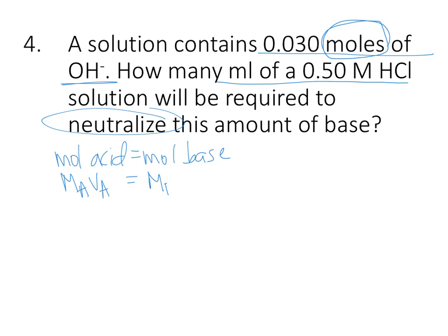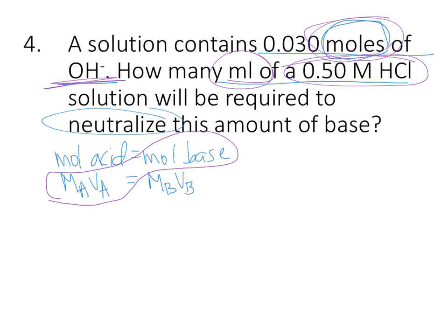And so then MBVB, the molarity times the volume of the base, is essentially equal to the moles of base. So then, since this time we're given the moles of the base, and it's asking for volume and molarity of an acid, then we can actually set my equation up to look like this. The molarity of the acid times the volume of the acid will equal the moles of base. So, molarity of acid, 0.50 M, volume of acid, X milliliters, moles of base, 0.030 moles, and then from there I'm going to divide both sides by 0.50 M.